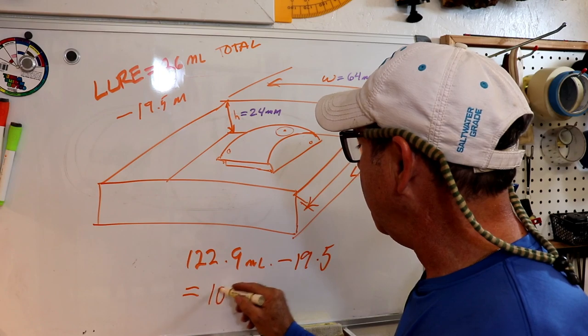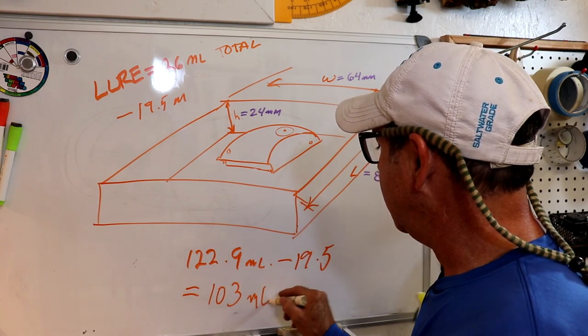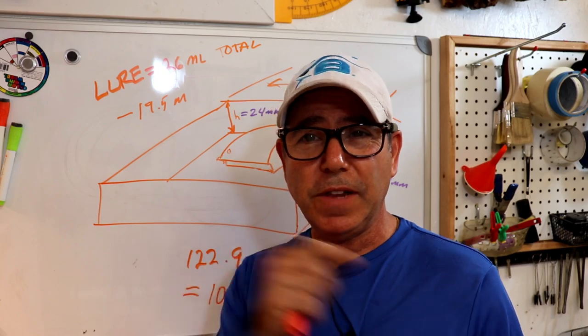And then I just subtract the 19.5 and that gives me 103 milliliters roughly. So that's what I'll use for that first half.